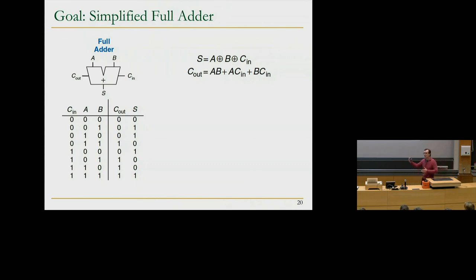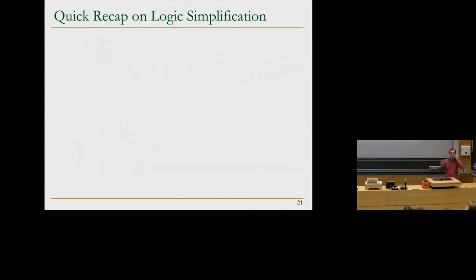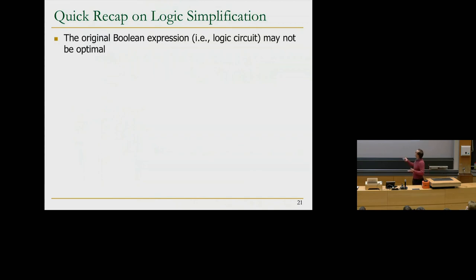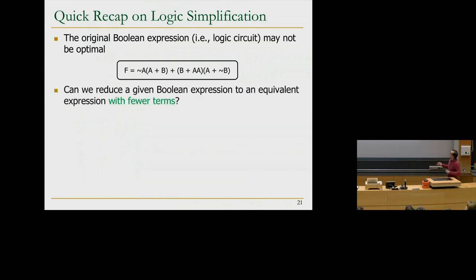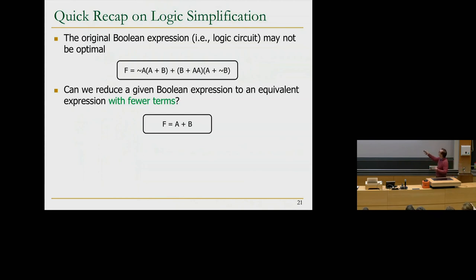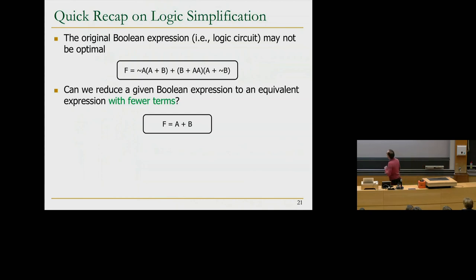There are other ways of simplifying Boolean logic. If you look at an original Boolean expression, the logic circuit may not be optimal. Someone may write something with A AND A, which clearly can be simplified. The question is: can we reduce a Boolean expression to an equivalent expression with fewer terms? Sum-of-products form is a standard canonical form — every circuit has a single sum-of-products form.